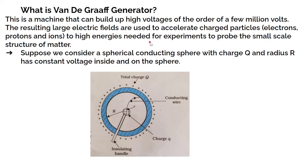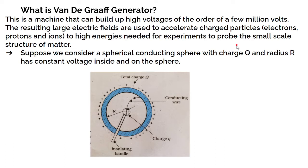Today we cover the Van de Graaff Generator. The Van de Graaff Generator is a machine that can build up high voltages of the order of a few million volts. The resulting large electric fields can be used to accelerate charged particles like electrons, protons, and ions to high energies needed for experiments to probe the small-scale structure of matter. Van de Graaff Generator generates high voltage and can produce large and strong electric fields.